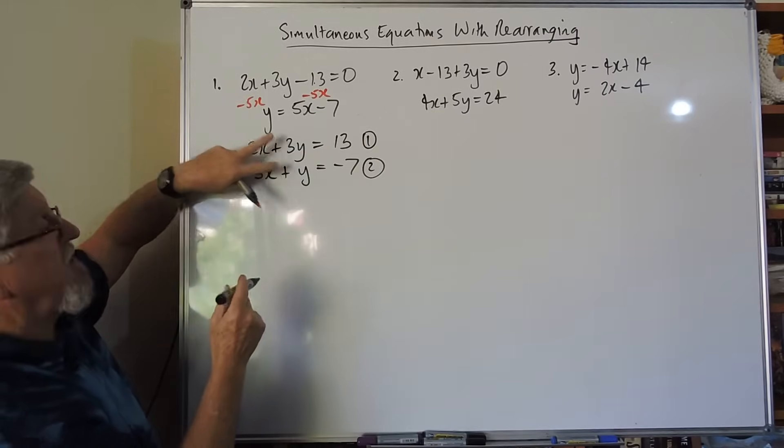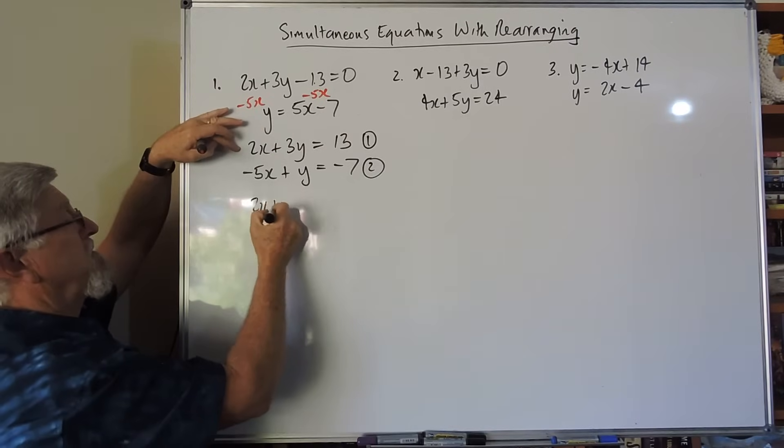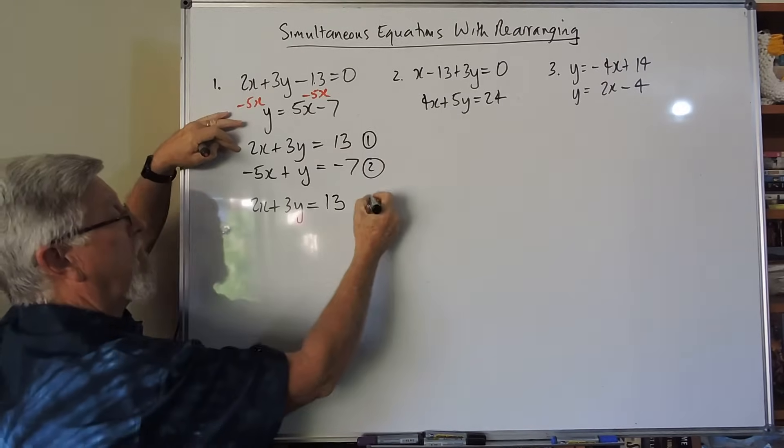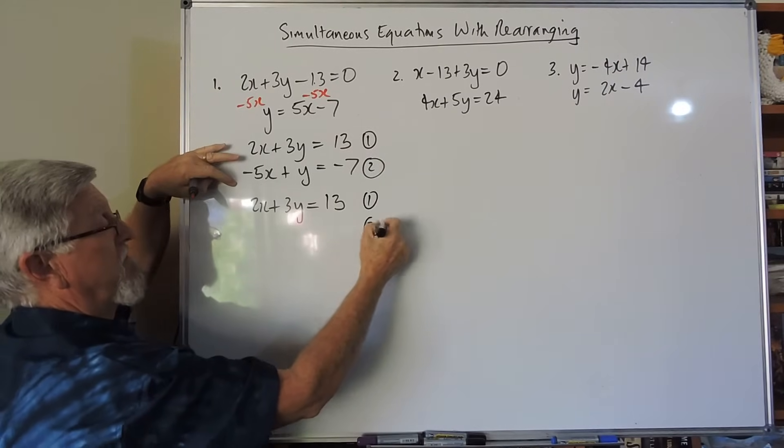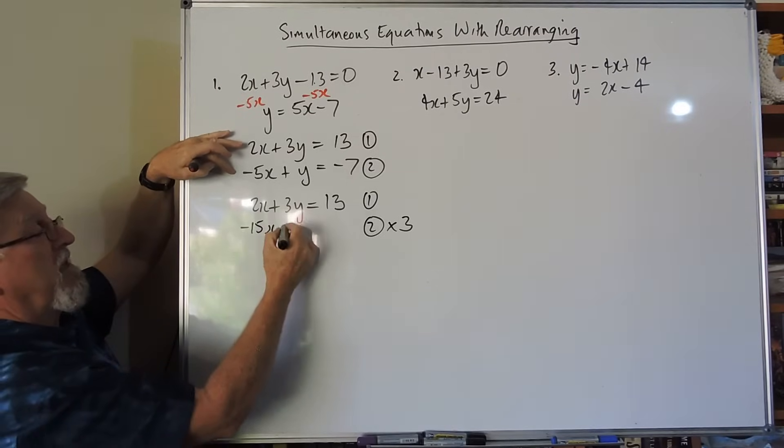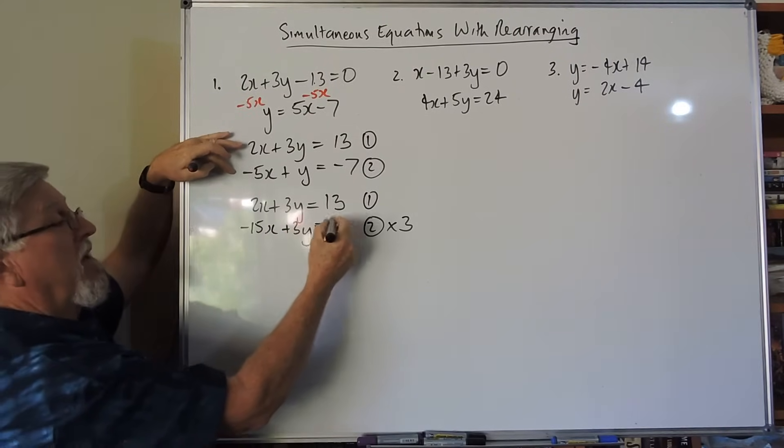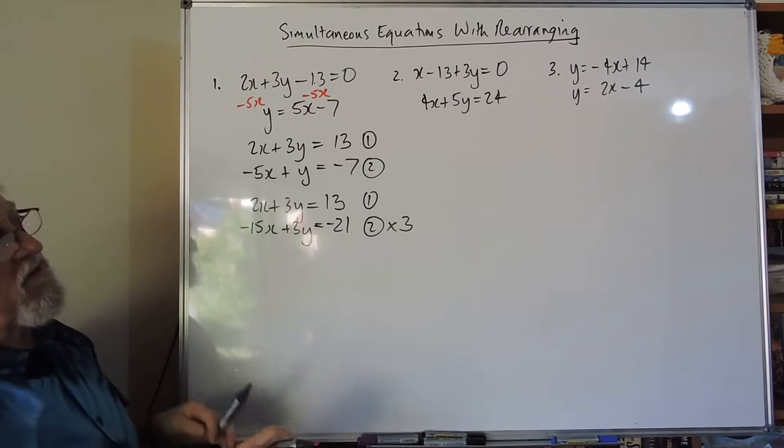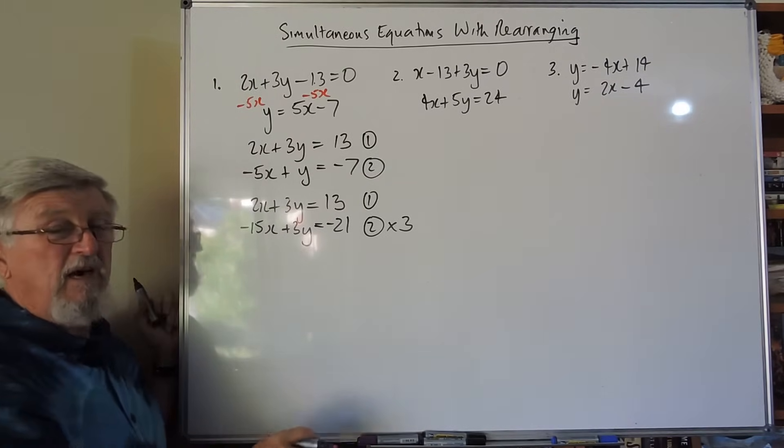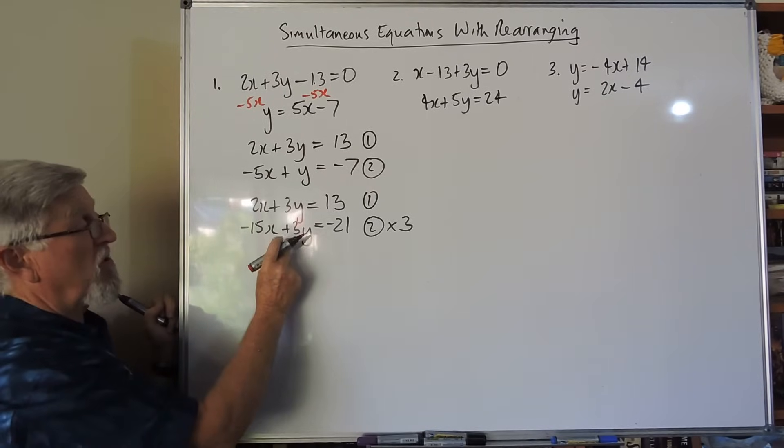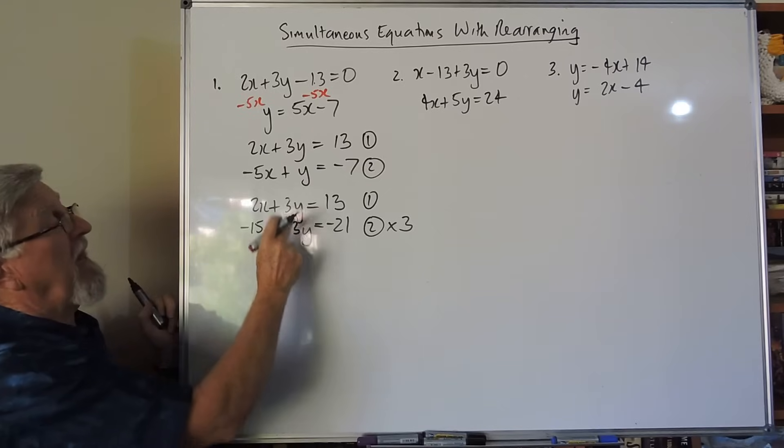If I leave the top equation the same, but I triple the second equation, that's minus 15x, that's plus 3y, and that's minus 21. Then I've got the 3y and the 3y, and you can see, the equations become more and more fiddly, but really in principle, they're not that hard.